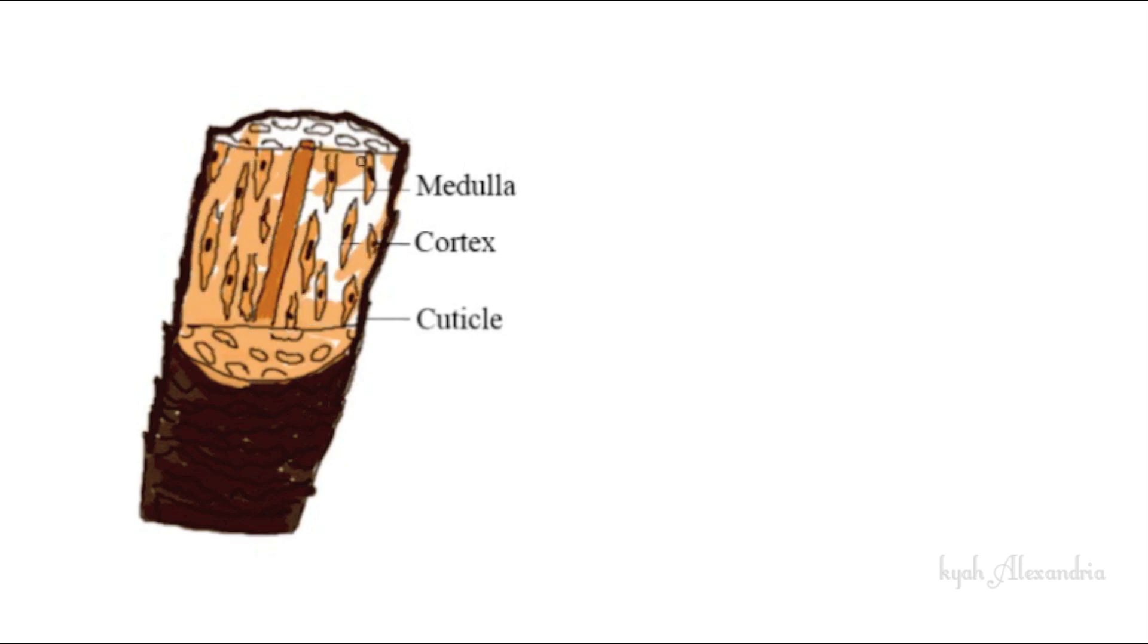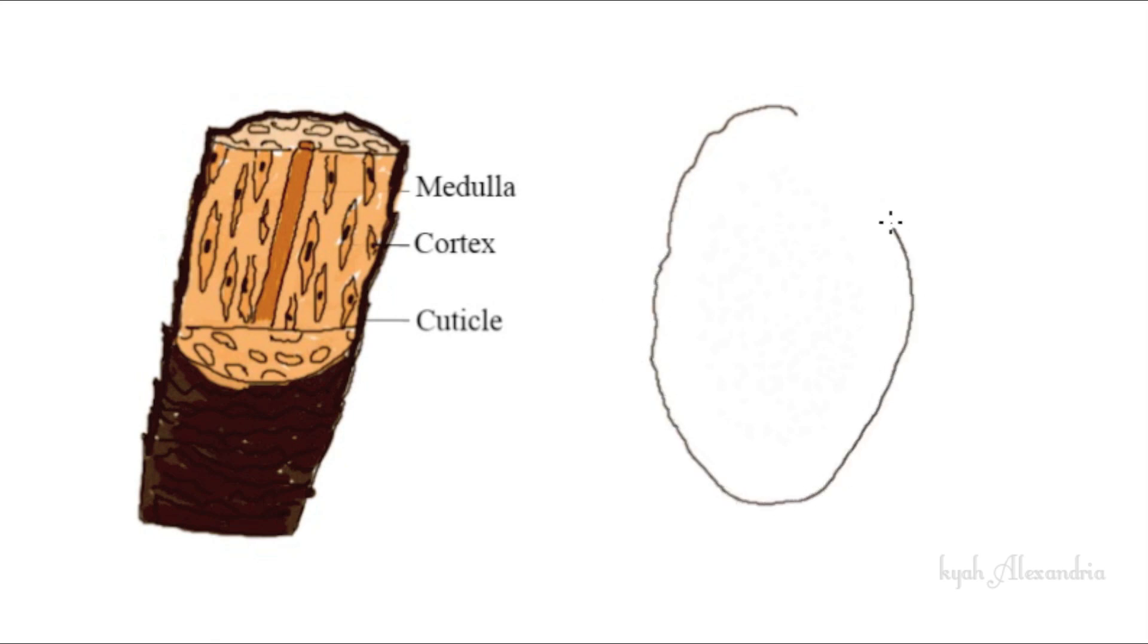As a result, the hair will look and feel rough and lackluster. The scales will be closed tight and flat and appear healthy when the hair is undamaged. Hair drawn is a cross section of the three layers.